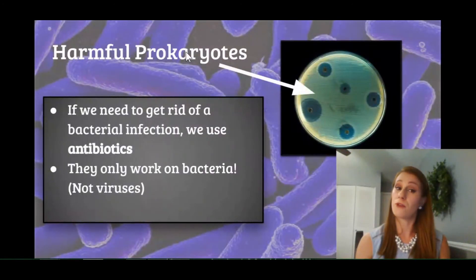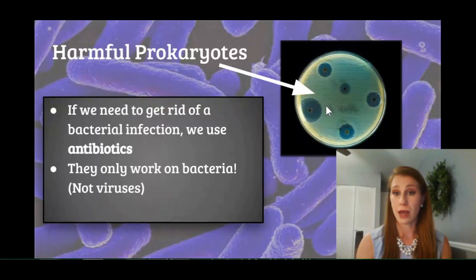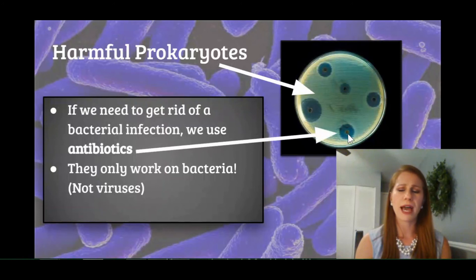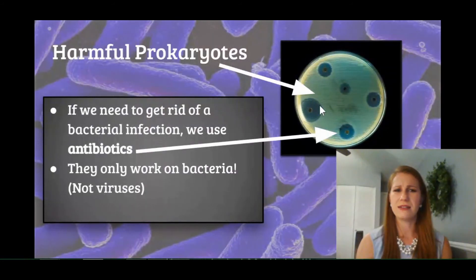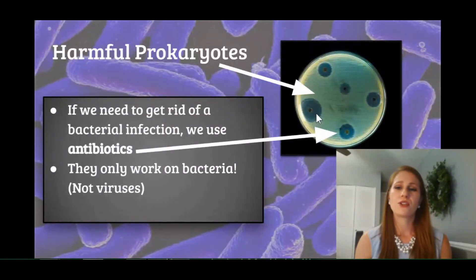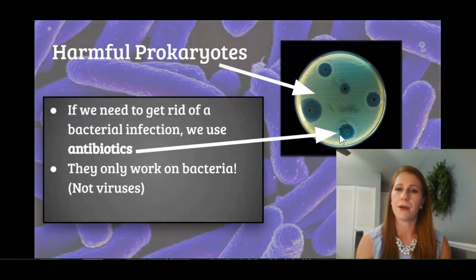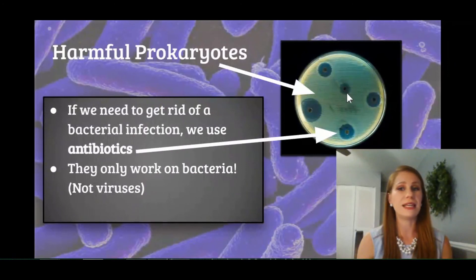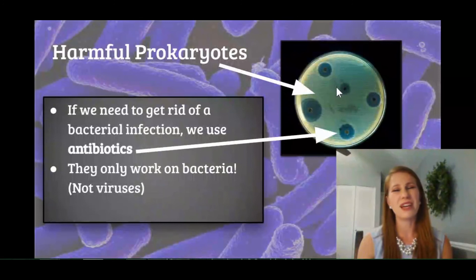Our harmful prokaryotes are found on this plate here. Those white streaks are the prokaryotes or bacteria — they're actually small circles called colonies, housing millions upon millions of bacteria. The other part of this plate are the small black dots, which are the antibiotics. We can notice that around the antibiotics, none of the prokaryotes can grow, because antibiotics kill prokaryotic cells. This is a test to see which antibiotic is most useful against a particular bacteria — this one here is probably the most effective, and this one would be the least effective because it's not killing as large a radius of bacteria.